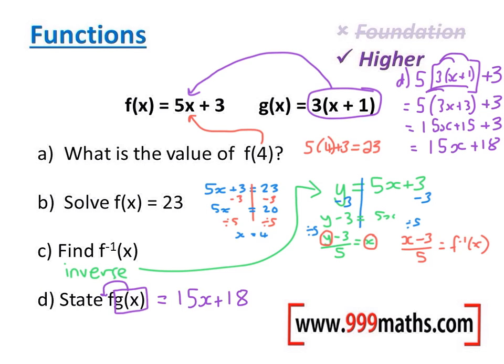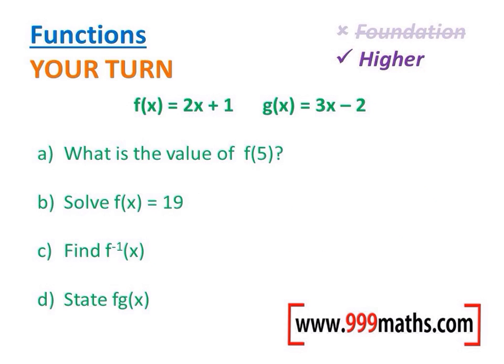Again, so that last part, what we've done is we've started with the g equation and we've just put it into the f one. This is the g one and we've just substituted it into the f one. Once we've done that, we've simplified it step by step until we've got our answer. So lots of skills here, some of which might be new, but all of which are definitely doable on an exam paper.